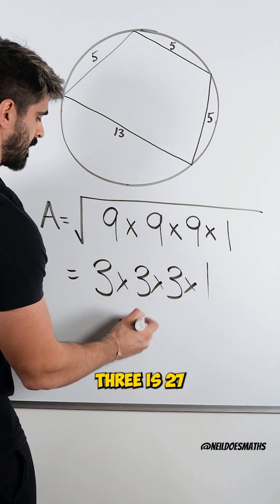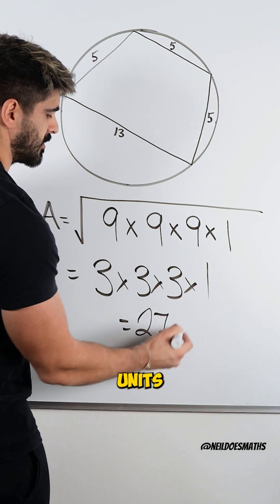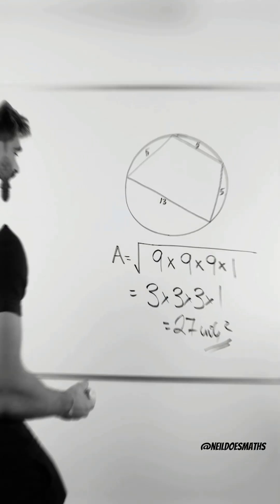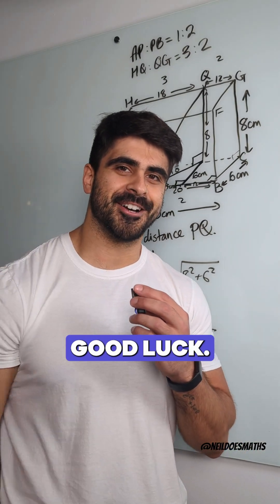3 times 3 times 3 is 27 units squared. Nice. Big up India. Make sure you hit the like button to accumulate mass. Good luck.